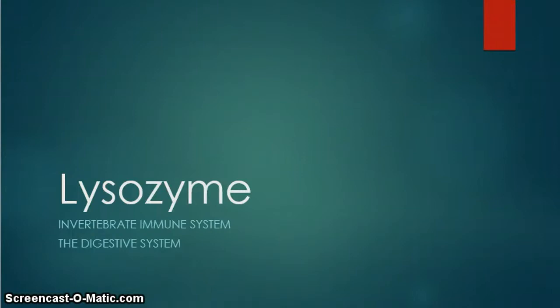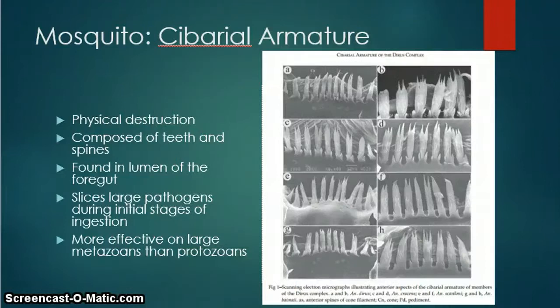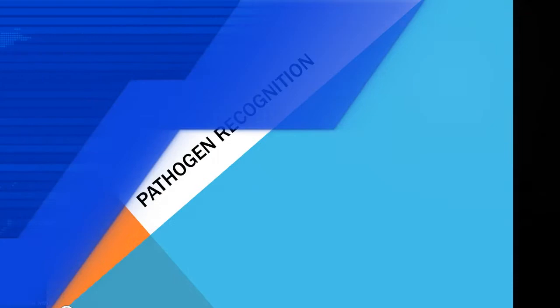Invertebrates use enzymes, specifically lysozyme, as a defense mechanism against pathogens. These enzymes are found in the digestive system and break down the cell walls of bacteria. This acts as a chemical barrier against pathogens ingested with food. Mosquitoes have also developed another defense barrier as part of their digestive system: the cibarial armatures. These teeth-like structures physically destroy pathogens as they enter the digestive system. It is most effective on metazoans, such as roundworms, and on bacterial and viral pathogens.